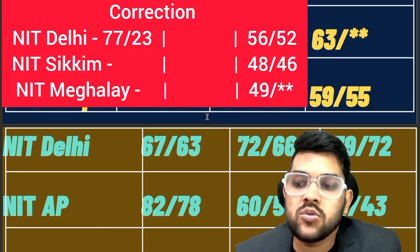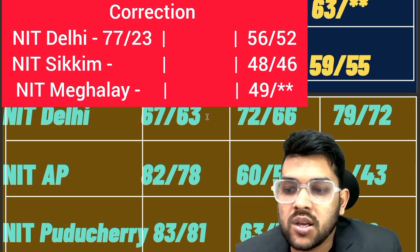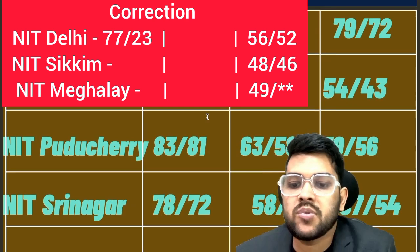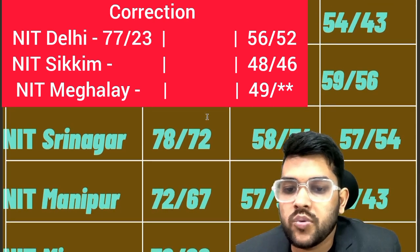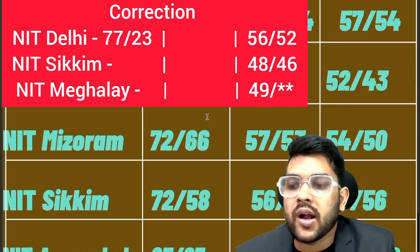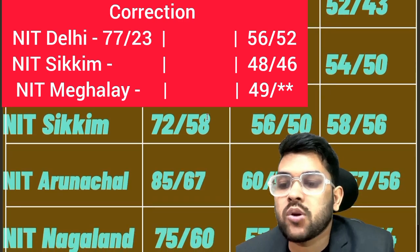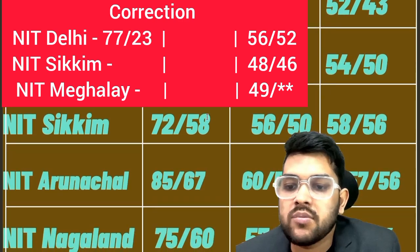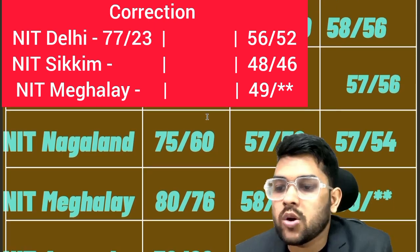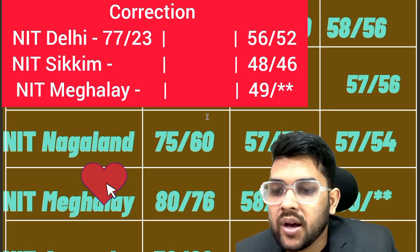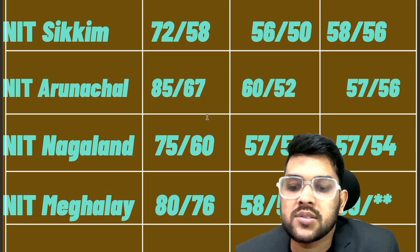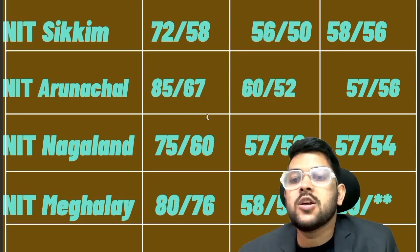For NIT Delhi: 67, 72, 79. For NIT Andhra Pradesh: 82, 60, 54. For Puducherry: 83, 63, 59. For Srinagar: 78, 58, 57. For Manipur: 72, 57. For Mizoram: 72, 57, 54. For Sikkim: 72, 56, 58. For Arunachal: 85, 60, 57. For Nagaland: 75, 57, 57. For Meghalaya: 80, 58, 59. For Agartala: male 72, 56, 56; female 66, 48, 54.